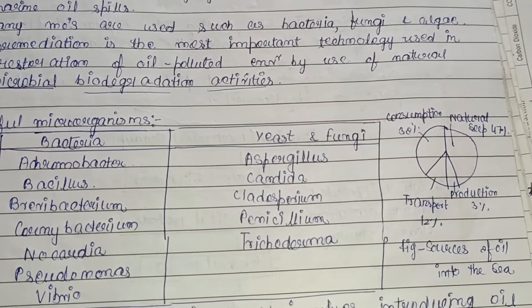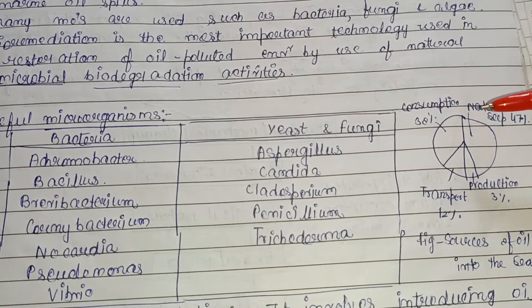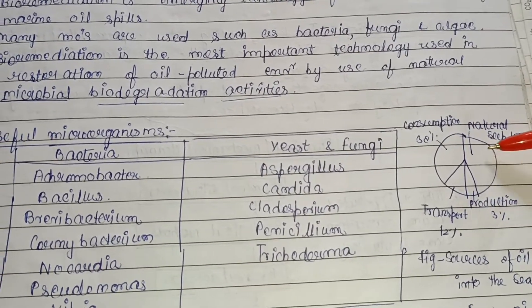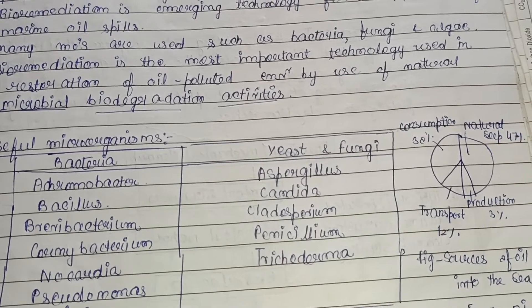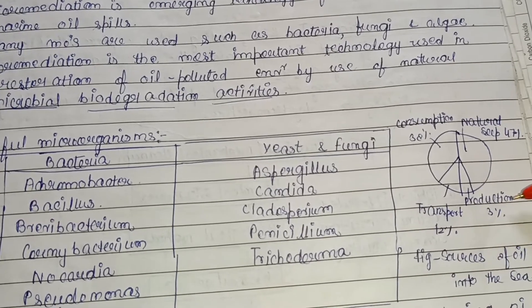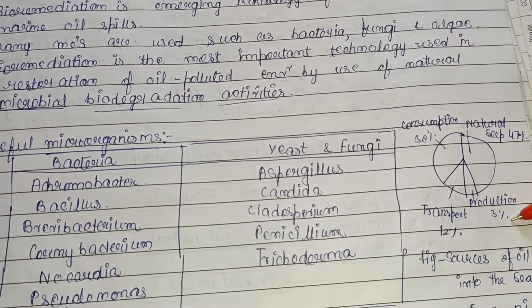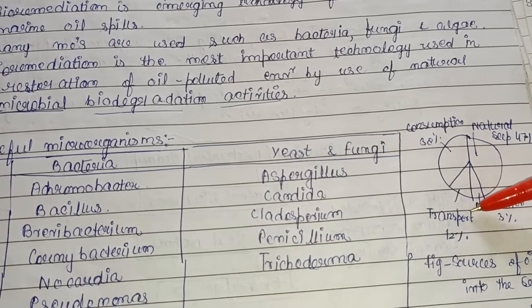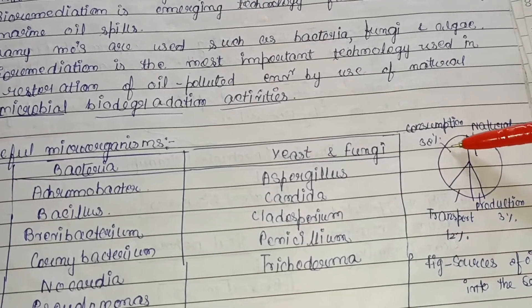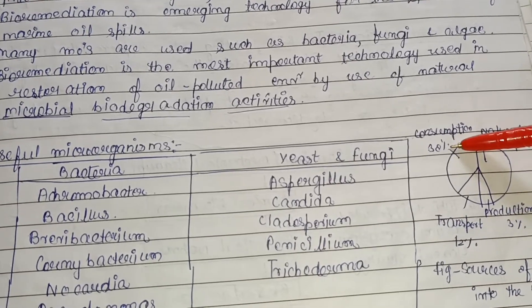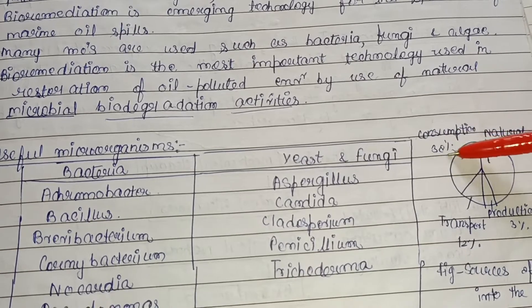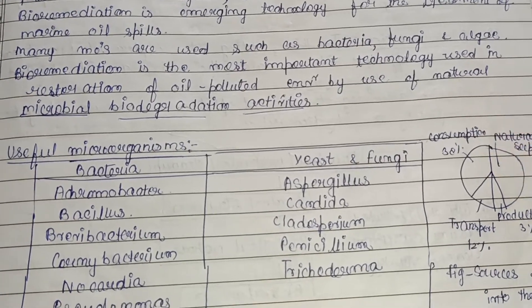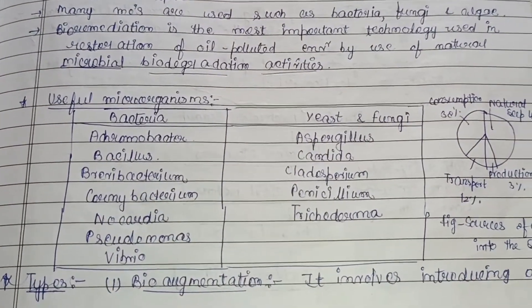The sources of oil entering the sea include: natural seeping, contributing 47% — as oceans are rich reservoirs of natural oil; production processes contributing 3%; transport via ships or other means contributing 12%; and consumption contributing 38%, which is the maximum source of oil entering the marine ecosystem.